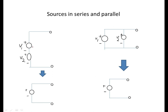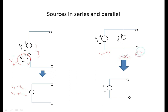For sources in series and parallel: if V1 and V2 are connected in series, the equivalent is V1 + V2. If V2 is reversed, the equivalent is V1 − V2. Voltage sources cannot be connected in parallel unless V1 = V2; if equal, the equivalent voltage is either V1 or V2.